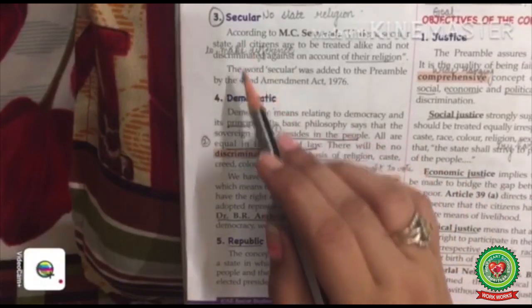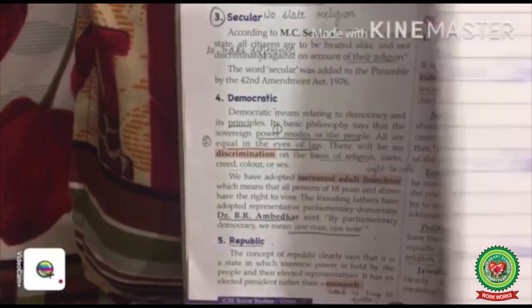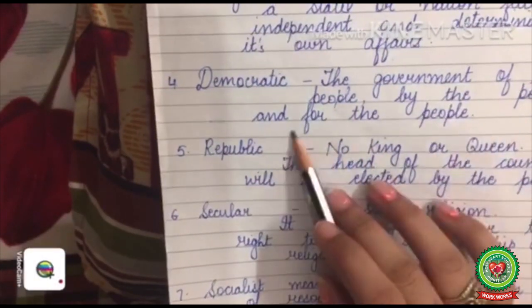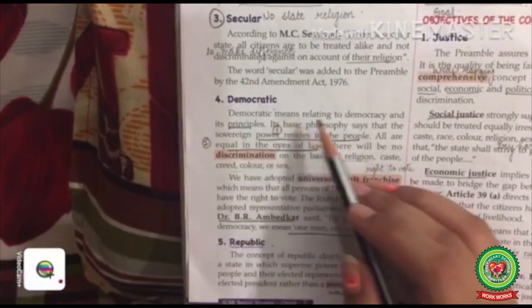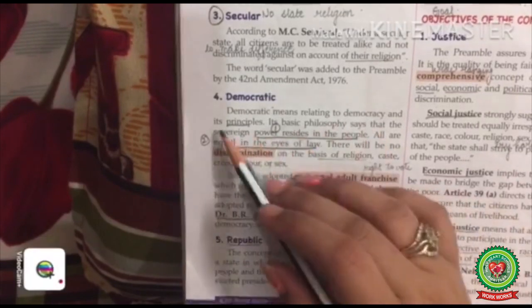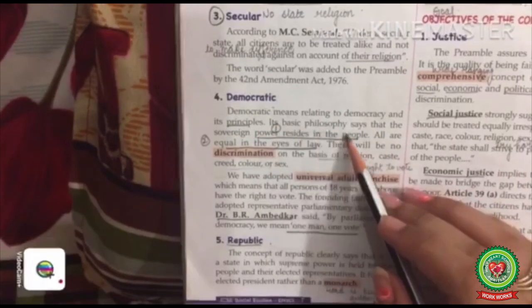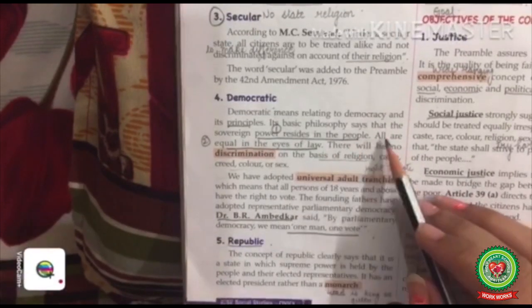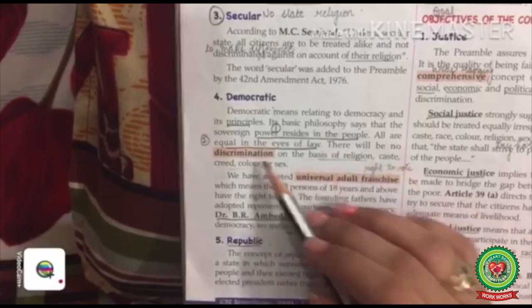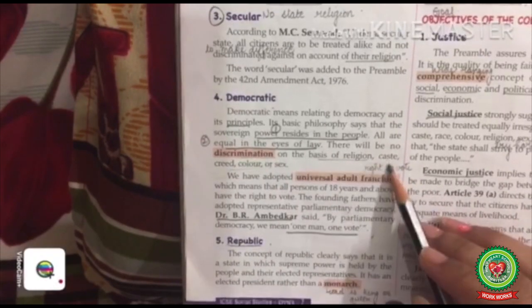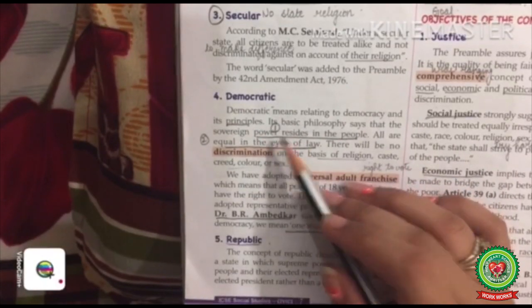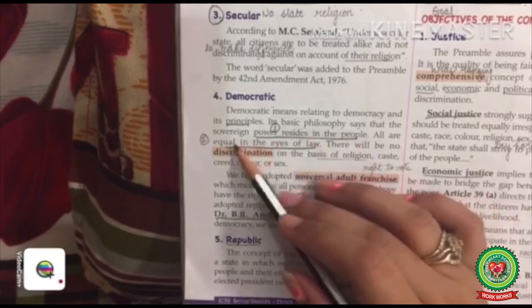Next comes Democratic. Democratic means the government of the people, by the people, and for the people. Democratic means relating to democracy and its principles. Its basic philosophy says that sovereign power resides in the people. All are equal in the eyes of law. There will be no discrimination on the basis of religion, caste, creed, color, or sex.